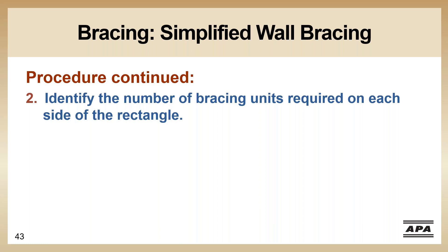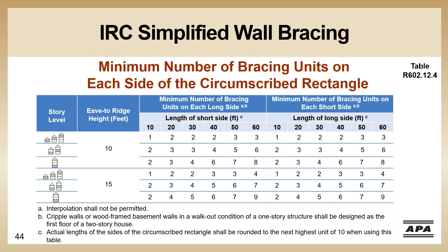When you go into the table, you determine the number of bracing units required. This is completely different from the IRC prescriptive, where you pulled out a required bracing length and then adjusted it. With the IRC simplified, you go into the table and come out with a number of bracing units. You use the length of the short side to determine the bracing units on the long side, and the length of the long side to determine the bracing units on the short side. Since this is a wind-only method, this is that same concept of the perpendicular walls providing the support.